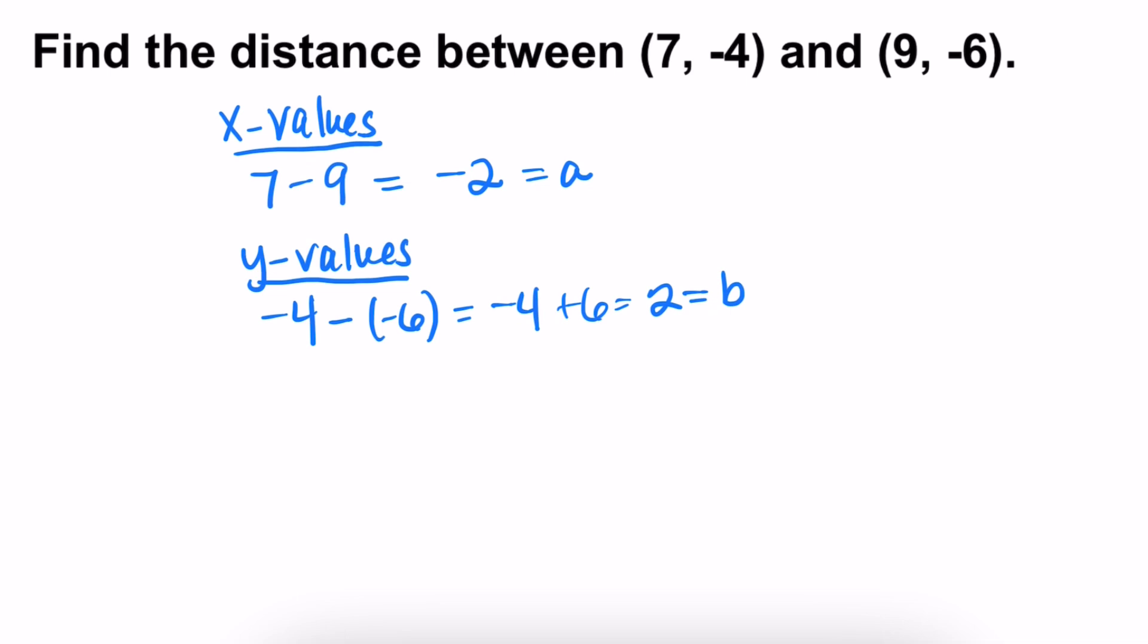Plug into the Pythagorean theorem. Remember, it's a squared plus b squared equals c squared. So this would be negative 2 squared plus 2 squared equals c squared. This would be 4 plus 4 is equal to c squared. 8 is equal to c squared. Take the square root of both sides and the value of c, again I'm rounding to the nearest tenth, it's going to be 2.8. And you're done.